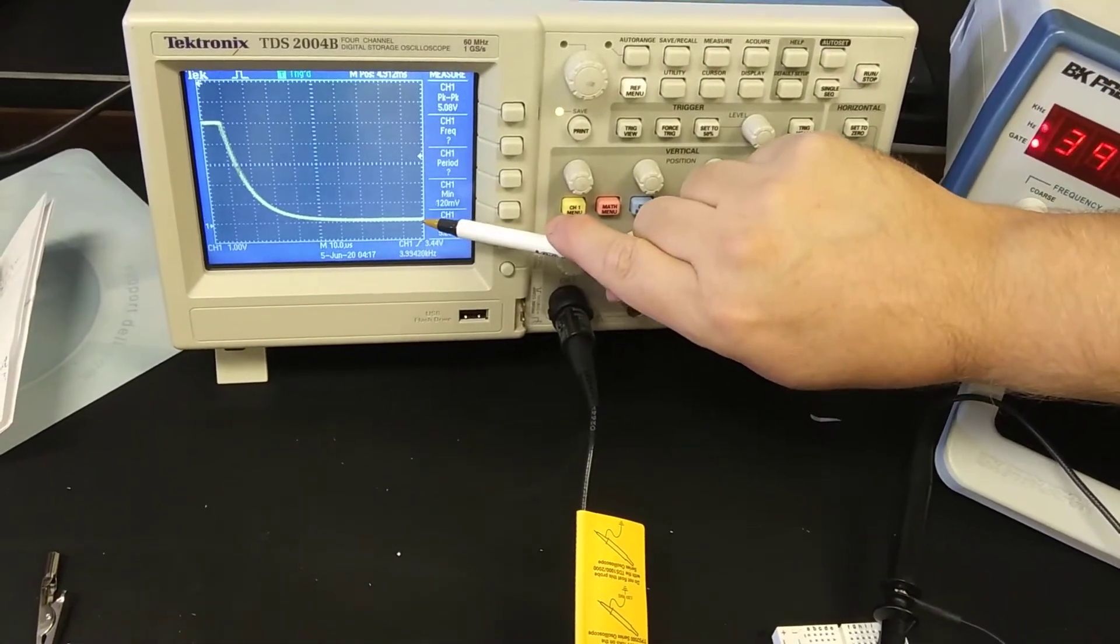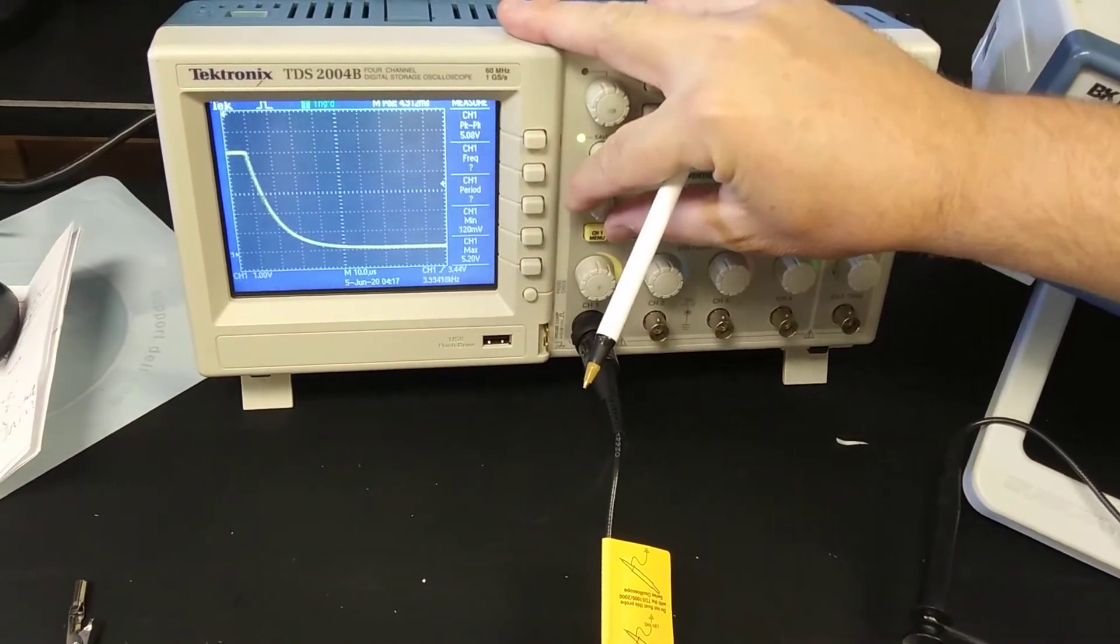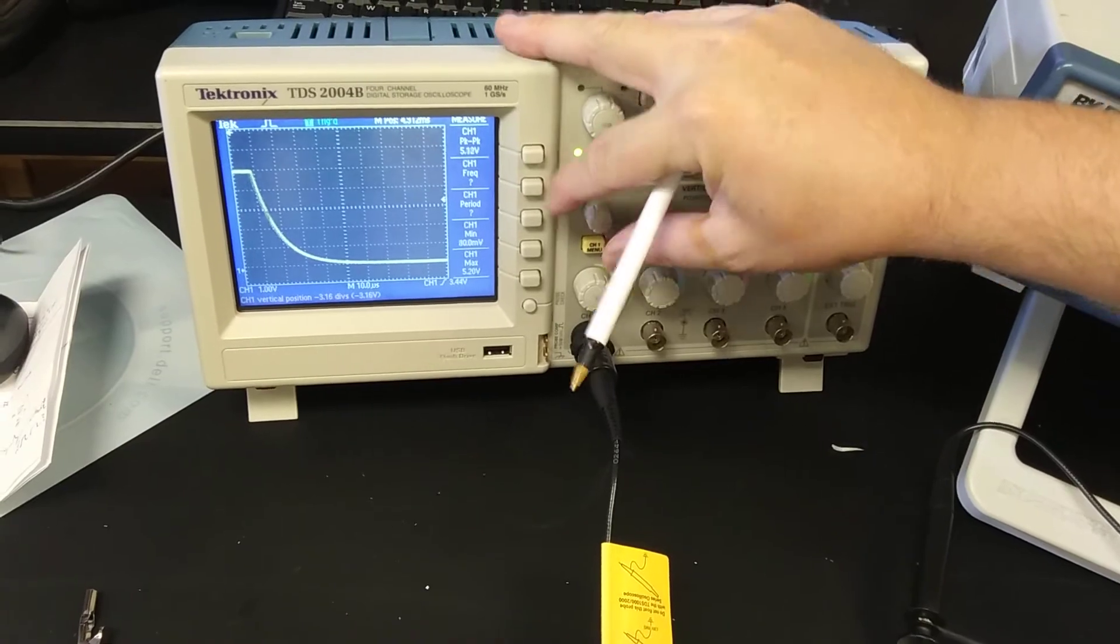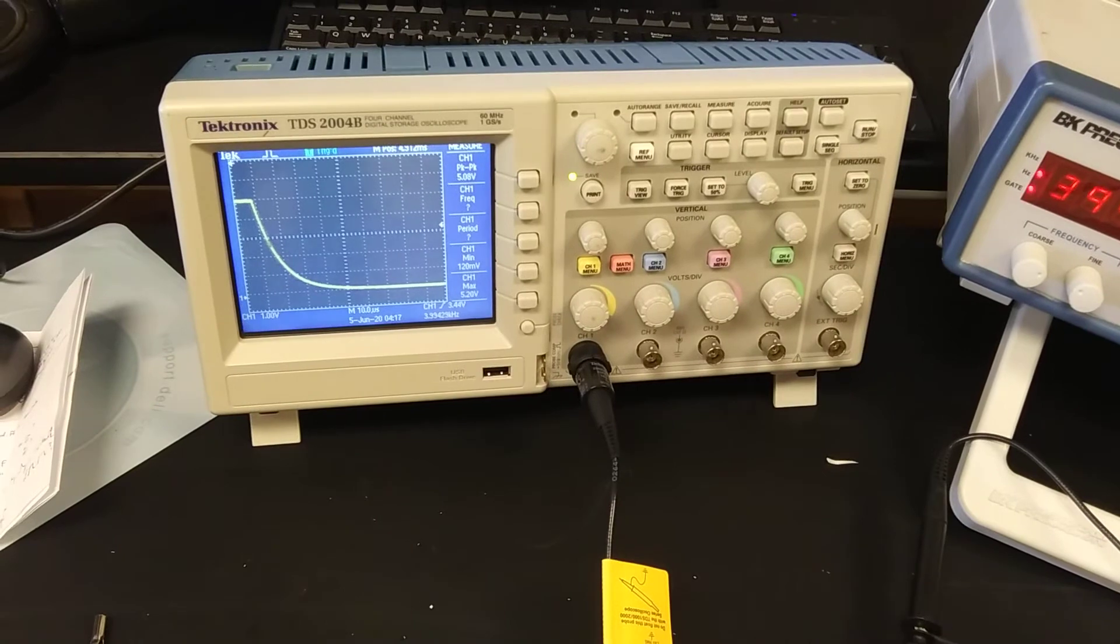So again, this is zero and this is five. Get that just a little bit better. There we go. So it's going from zero to five volts. This is five up here, approximately.